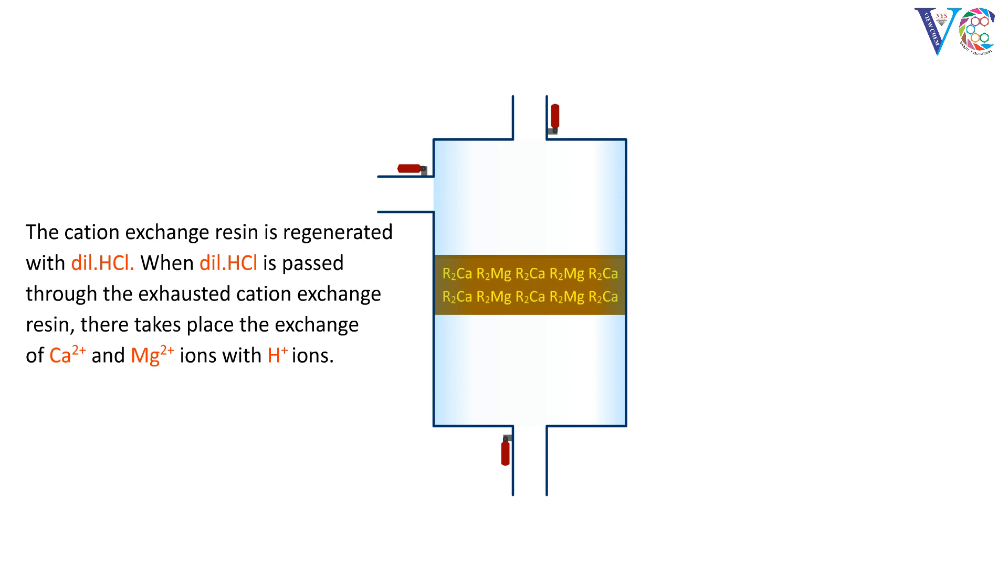The cation exchange resin is regenerated with dilute HCl. When dilute HCl is passed through the exhausted cation exchange resin, there takes place the exchange of Ca2+ and Mg2+ ions with H+ ions.